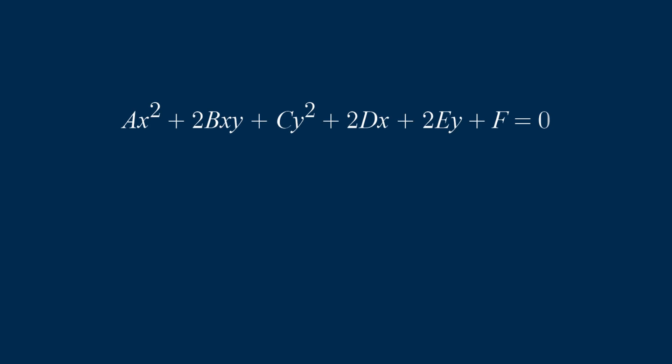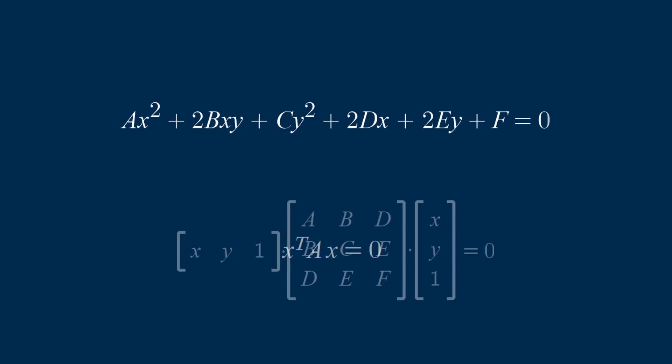But what's the dual of a conic? You may have seen a conic section represented like this before, but it's actually much cleaner to write it like this. Here, the vector x is a homogeneous coordinate, and the matrix A is a symmetric matrix. If you expand this out, you get the same equation. This form makes finding the dual super easy. Turns out, you just invert the matrix, which is super convenient.